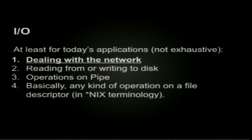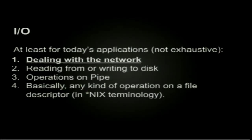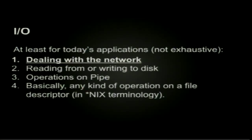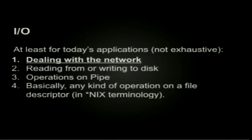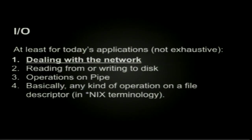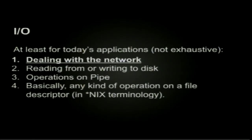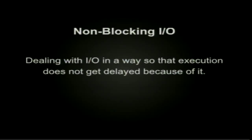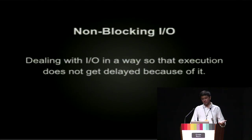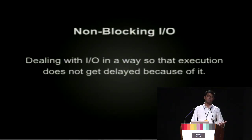So now let's talk about IO, at least for modern applications. Things like dealing with the network, reading or writing from your file system, doing operations on a pipe — these are the kinds of things that fall under IO. In general, if you want to define any kind of IO operation, it would be dealing with file descriptors or doing operations on file descriptors. For the scope of this talk, we are going to talk about dealing with the network and how to implement non-blocking IO while doing networking in Python. Non-blocking IO is essentially dealing with IO so that it does not block execution.